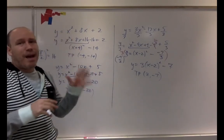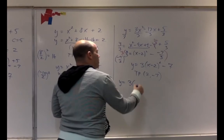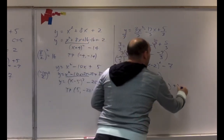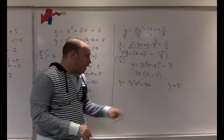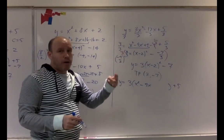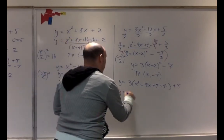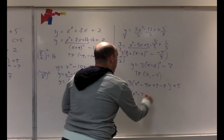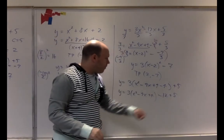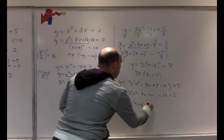Another approach — more advanced, suitable for HL students — is to factor out 3 first: Y equals 3 times (X squared minus 4X) plus 5. Complete the square inside: negative 4 divided by 2 is negative 2, squared is 4. Add 4, subtract 4 inside. This gives Y equals 3 times (X squared minus 4X plus 4 minus 4) plus 5, ultimately yielding Y equals 3(X minus 2) squared minus 7.